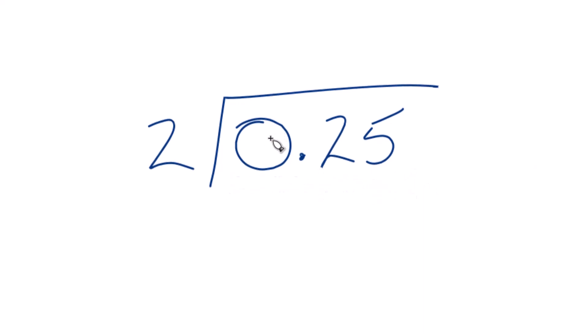So 2 doesn't go into 0, so we could just move the decimal point over 1 here as long as we wrote 0 point up here. So that's a good start. 1 times 2, that's 2, subtract, you don't get anything. You get 0 here.